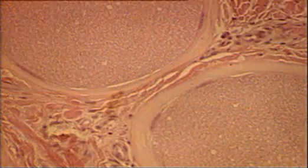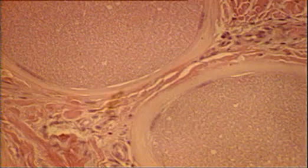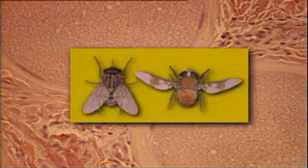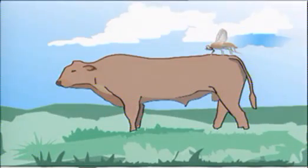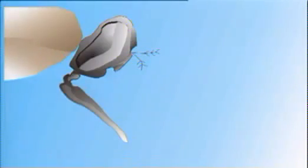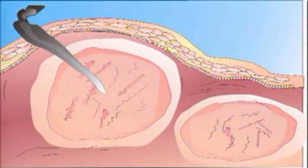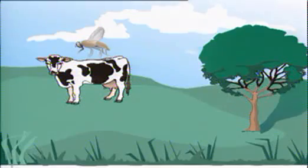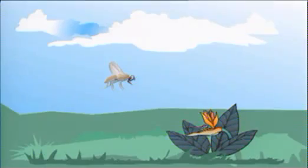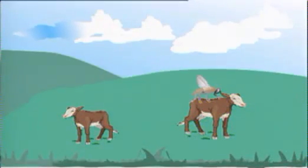Mechanical transmission of cyst organisms or bradyzoites by biting flies is the only confirmed means of transmission. When feeding on infected cattle, blood-sucking flies such as horse flies or tabanids, tsetse flies and stable flies rupture Besnoitia cysts in the skin. The bradyzoites from the cysts can survive on the mouth parts of the fly and are injected into a new host when the fly feeds again.